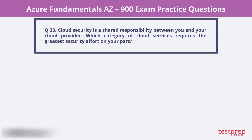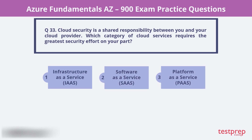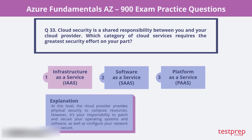Question 33. Cloud security is a shared responsibility between you and your cloud provider. Which category of cloud services requires the greatest security effort on your part? 1. Infrastructure as a Service. 2. Platform as a Service. 3. Software as a Service. The correct answer is 1, Infrastructure as a Service. At this level, the cloud provider provides physical security to compute resources. However, it's your responsibility to patch and secure your operating systems and software, as well as configure your network to be secure.